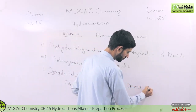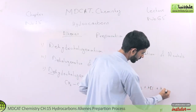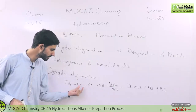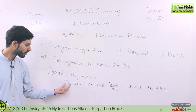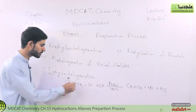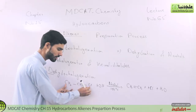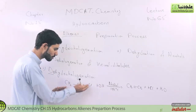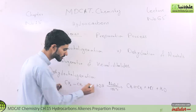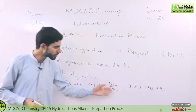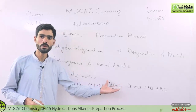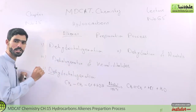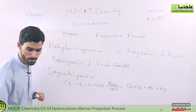Ethylene is the product of this process. Water is also formed. In the presence of potassium hydroxide — which is a strong base — with alcohol as a medium and 100 degrees centigrade temperature, this process is complete and alkene formation occurs. This is the first method.